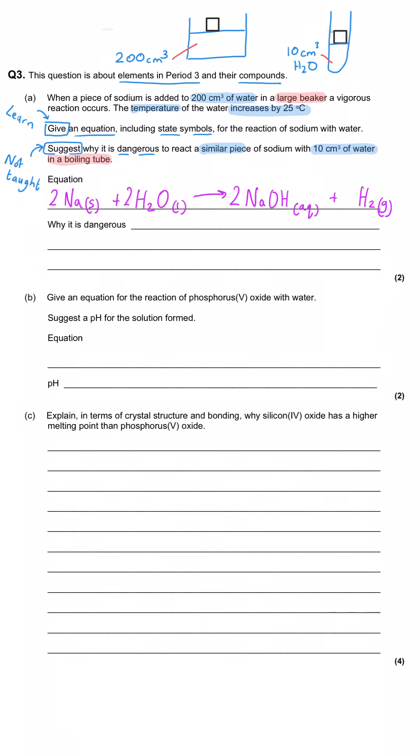And then for the explanation of why it's dangerous, well this volume, this new proposed volume of 10 cm³ is actually 20 times smaller than the original volume. And so you'd expect the temperature to rise by 20 times as much because the energy gets spread out around the water molecules that there are, and when there are fewer water molecules that means each molecule will get a bigger proportion of the energy.